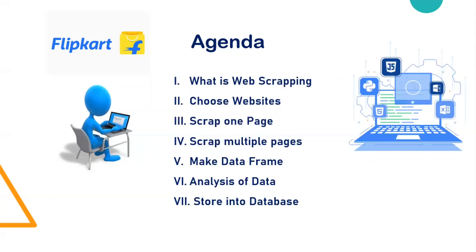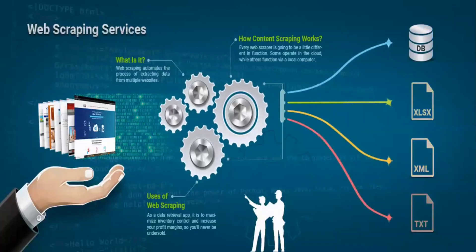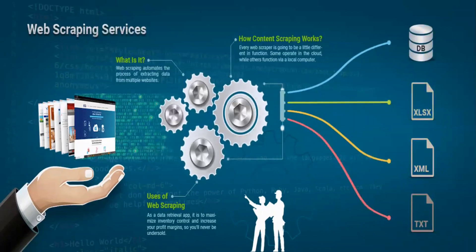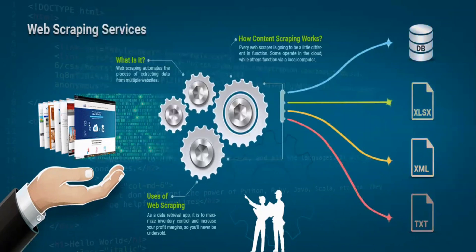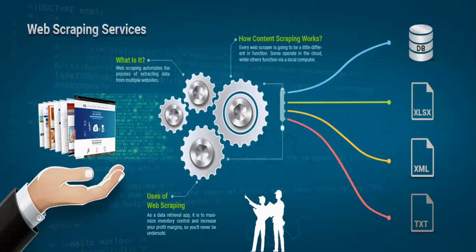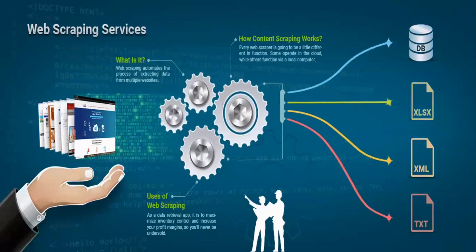Let's first understand how web scraping works. Web scraping is nothing but collecting data from a particular website and storing it into a database. Your data is available on a website in HTML and CSS format — that's called unstructured format. With the help of Python as a tool, we collect this data and store it into a particular database.